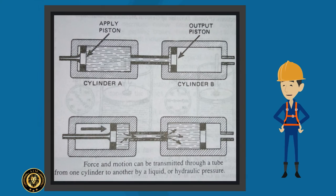Motion can be sent from one cylinder to another by a tube as you can see in the figure. As the applied piston moves, it forces pressurized fluid through the tube and into the other cylinder. This forces the output piston to move.